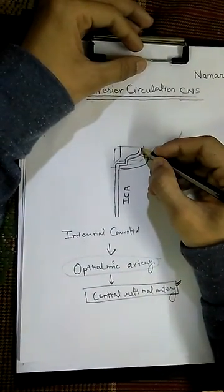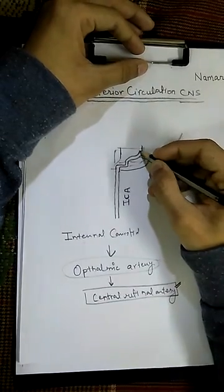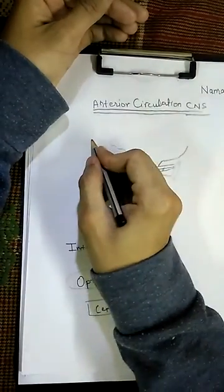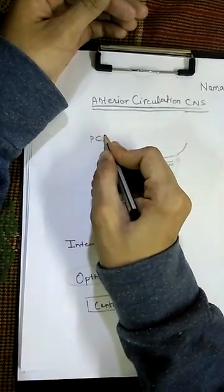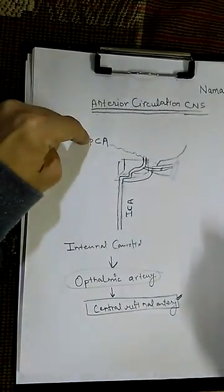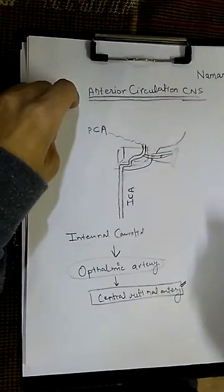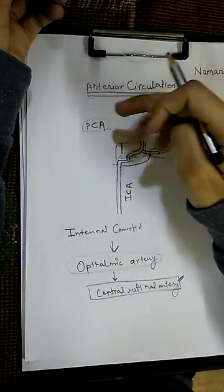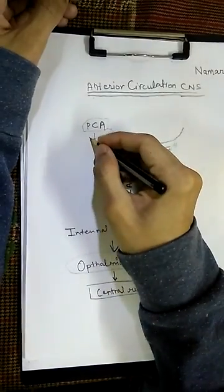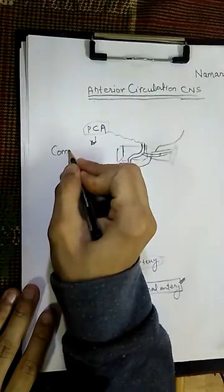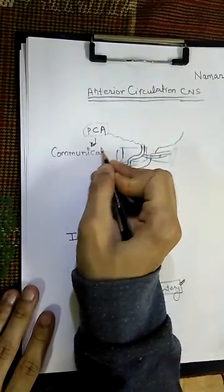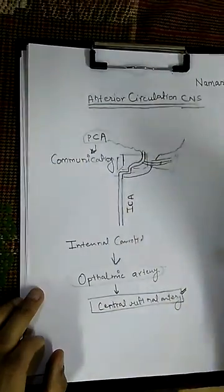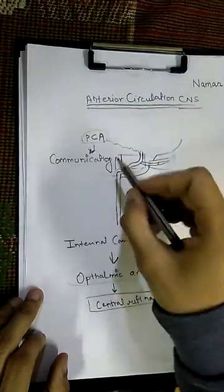Going forward from the cavernous sinus, this internal carotid artery pops out and gives two small branches. One is the posterior communicating artery, which is actually going to connect with the posterior cerebral artery. Don't confuse the two — the posterior cerebral artery (PCA) and the posterior communicating artery are different. The posterior communicating artery is going to join with the posterior cerebral artery.